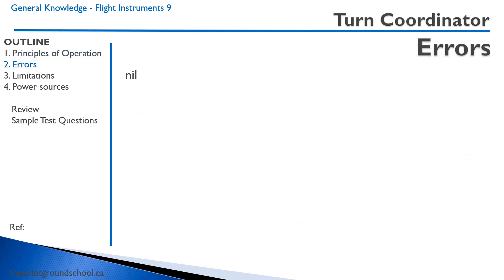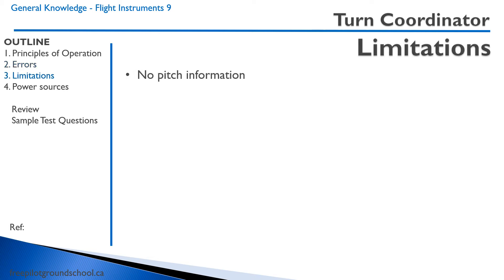There are no errors associated with the turn coordinator. The only limitation is that it displays no pitch information. So if you have to rely on it because your attitude indicator failed, it will tell you if your wings are level, but it will not tell you if you're nose high or nose low — you'll have to look at other instruments for that.